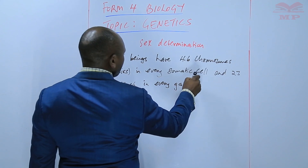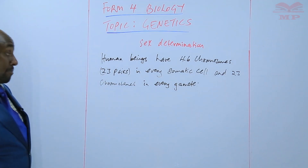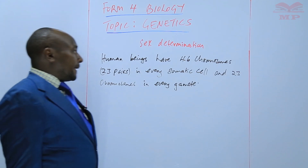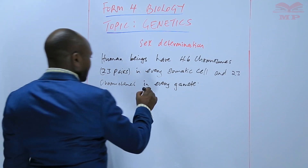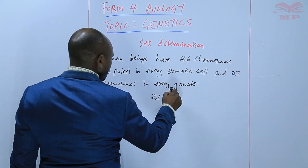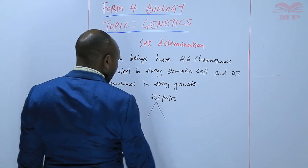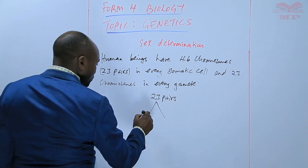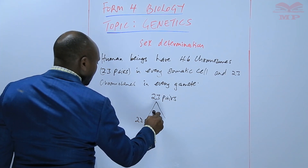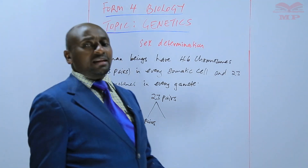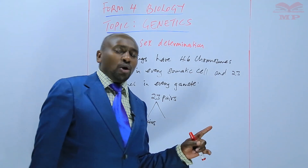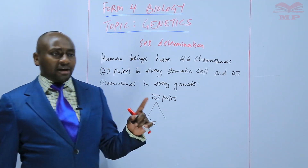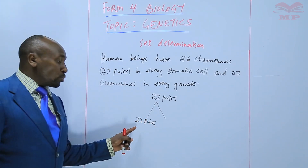In every gamete, that is the sperm cell or an ovum. Now, out of these 23 pairs in a somatic cell, there are 22 pairs that are responsible for all the other body characteristics — the color of the skin, tallness, the shape of the nose, the lobed or attached earlobe. All those characteristics are contained within 22 pairs of chromosomes.